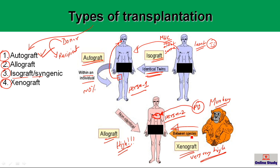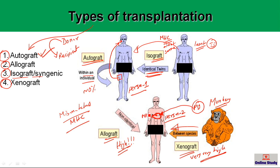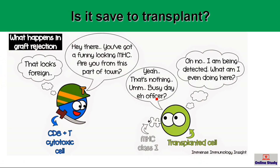This type of rejection happens due to mismatched MHC molecules. MHC molecules are expressed on all cells of the human body. So when a donor tissue or organ is placed in the recipient, those MHC molecules are detected as foreign molecules — and that is why they are rejected.